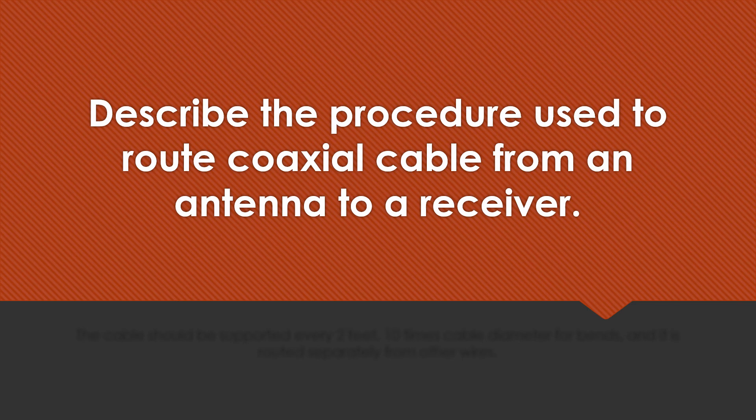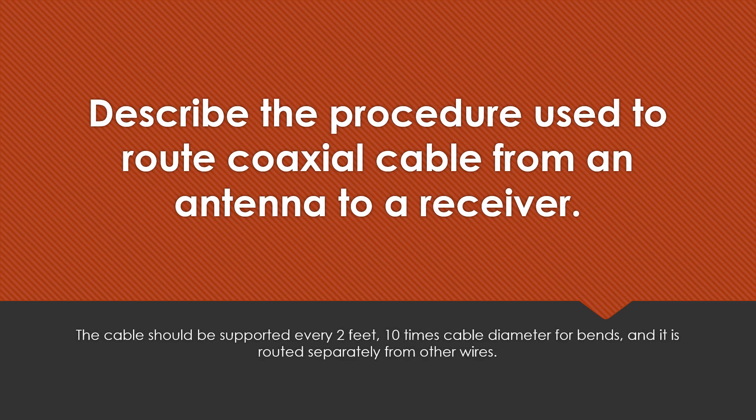Describe the procedure used to route coaxial cable from an antenna to a receiver. The cable should be supported every 2 feet, with bends no tighter than 10 times the cable diameter, and it is routed separately from all other wires.